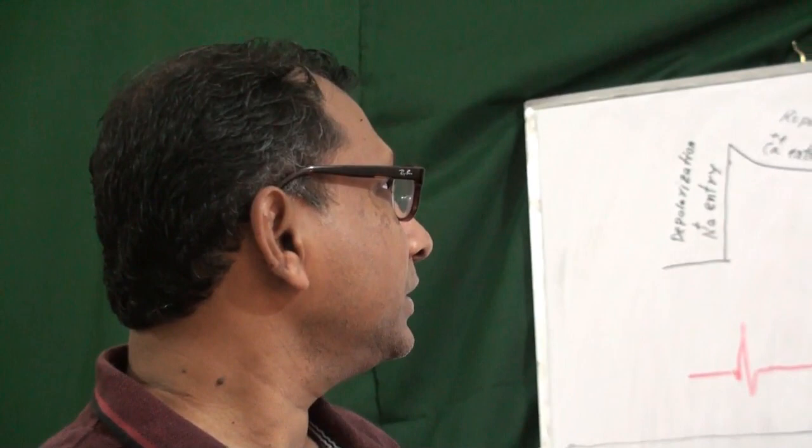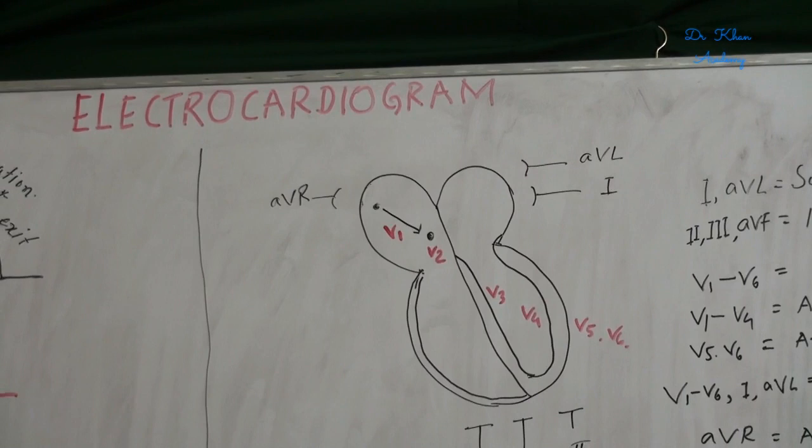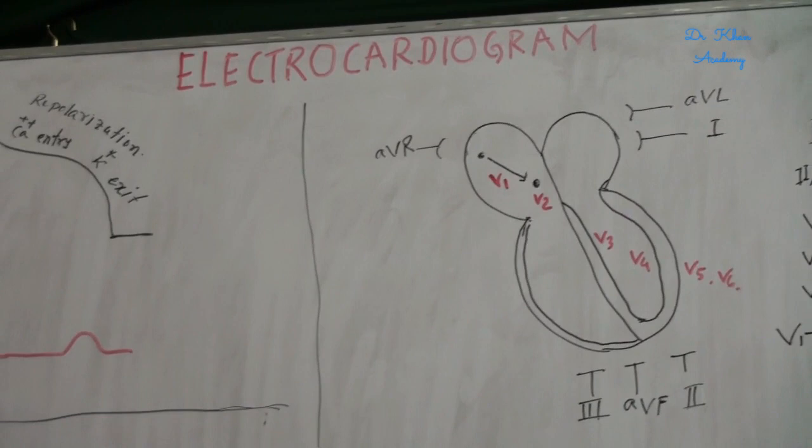Welcome to ECG first class. What is ECG or what is electrocardiogram? Electrocardiogram means electrical activity of myocardium or cardiac muscles which is presented by a graph, and this is called electrocardiogram.